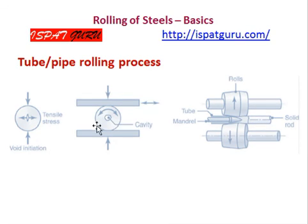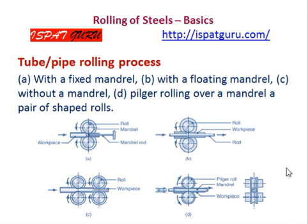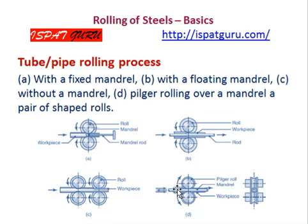An initial cavity is formed, and from this cavity the piercer goes inside. The tube rod-in process shows different configurations: a fixed mandrel, a floating mandrel, rolling without a mandrel, rolling with a mandrel, and use of a pair of shaped rolls. This completes the rolling process discussion.